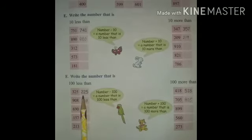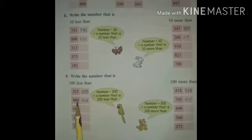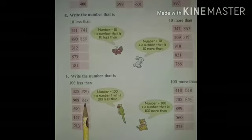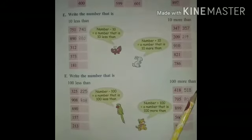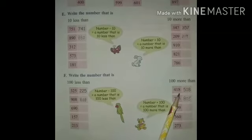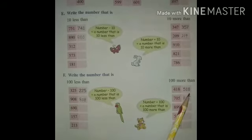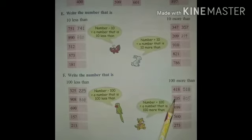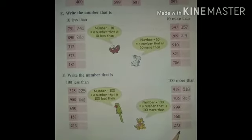Next, 100 less than. First question: 325 — 325 minus 100 gives 225. Second question: 908 — 908 minus 100 gives 808. Okay students, next see 100 more than — in this we have to add 100. Question: 418 — 418 plus 100 gives 518. Second: 705 — 705 plus 100 gives 805.